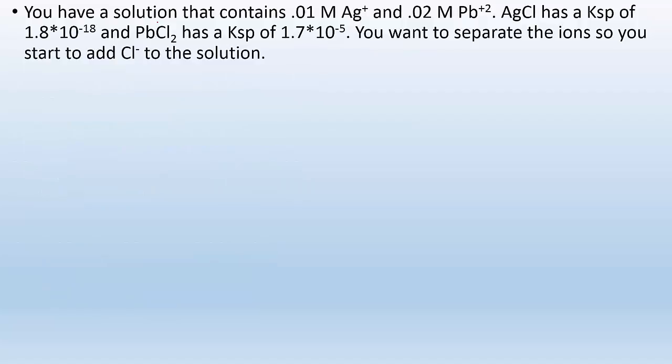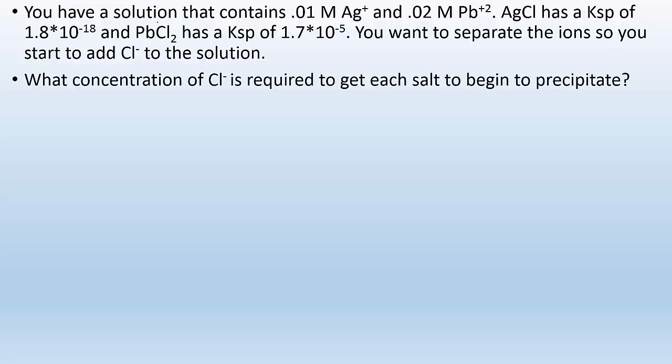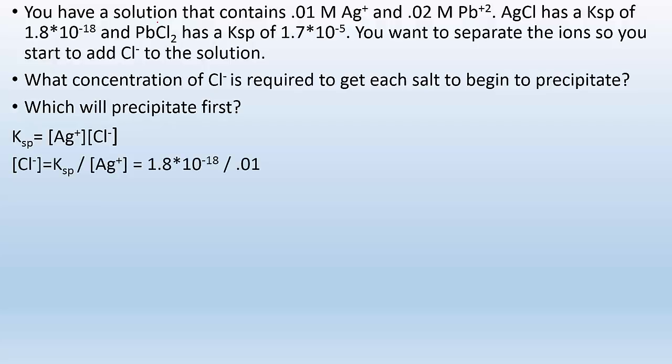Another math problem. You have a solution that contains 0.01 molar silver +1 ion and 0.02 molar lead +2 ion. AgCl has a Ksp of 1.8 times 10 to the minus 18 and lead chloride has Ksp of 1.7 times 10 to the minus 5. You want to separate the ion. So you start to add some chloride ion to the solution. What concentration chloride ion is required to get each salt to begin to precipitate and which will precipitate first? So to figure that out, you got to look at the Ksp expression of each of them one at a time. So I'm going to look at silver chloride first. That's going to be my Ksp expression. I rearrange, do some algebra to solve for chloride ion because that's my thing of interest. And I get Ksp divided by molarity of Ag+. So I just plug those in and I get an answer of 1.8 times 10 to the minus 16. So this is a really small number. So I barely need any chloride ion to get silver chloride to precipitate. But let's see about lead.